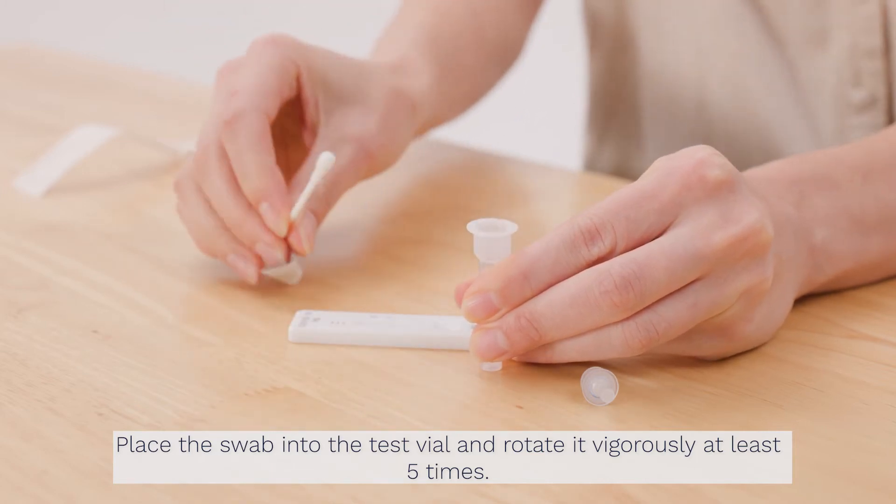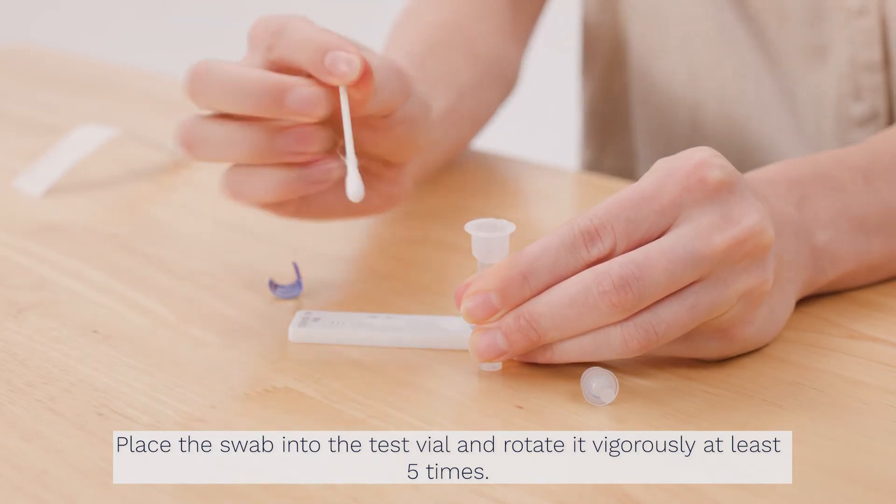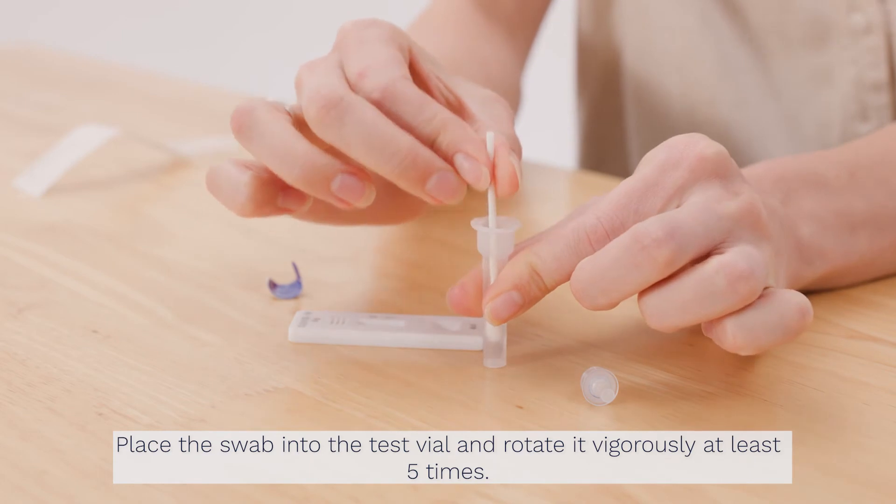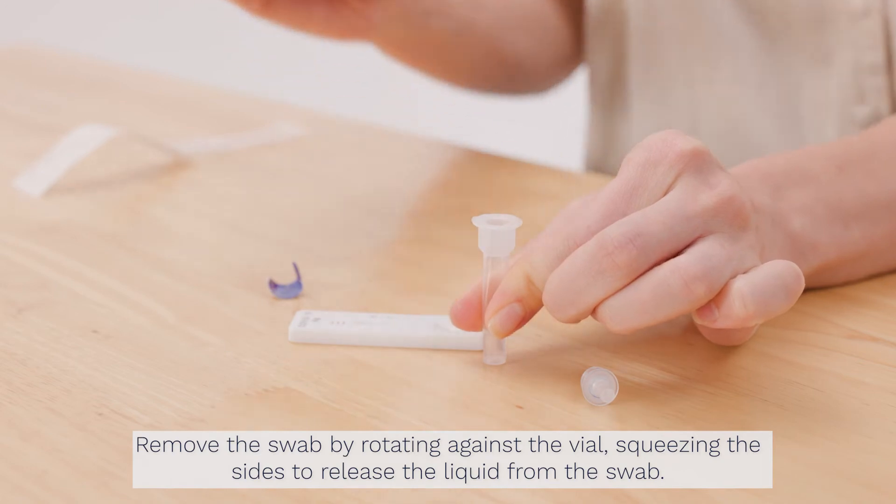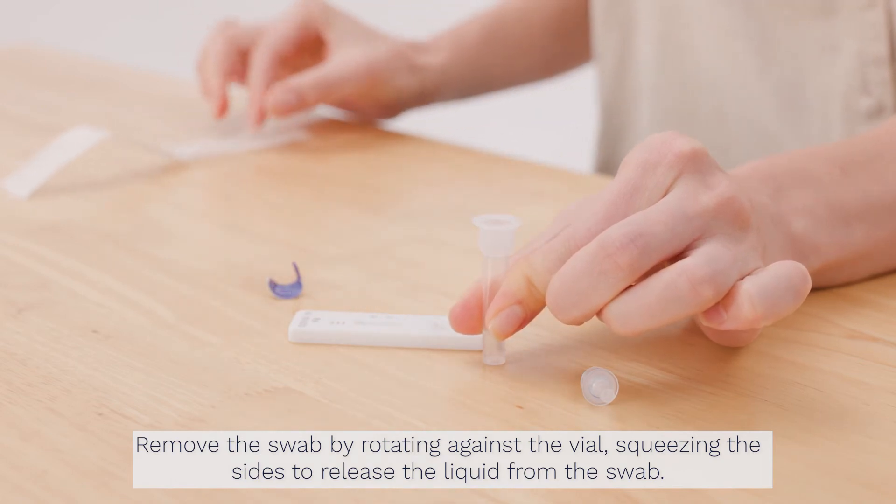Place the swab into the test vial and rotate it vigorously at least 5 times. Remove the swab by rotating against the vial, squeezing the sides to release the liquid from the swab.